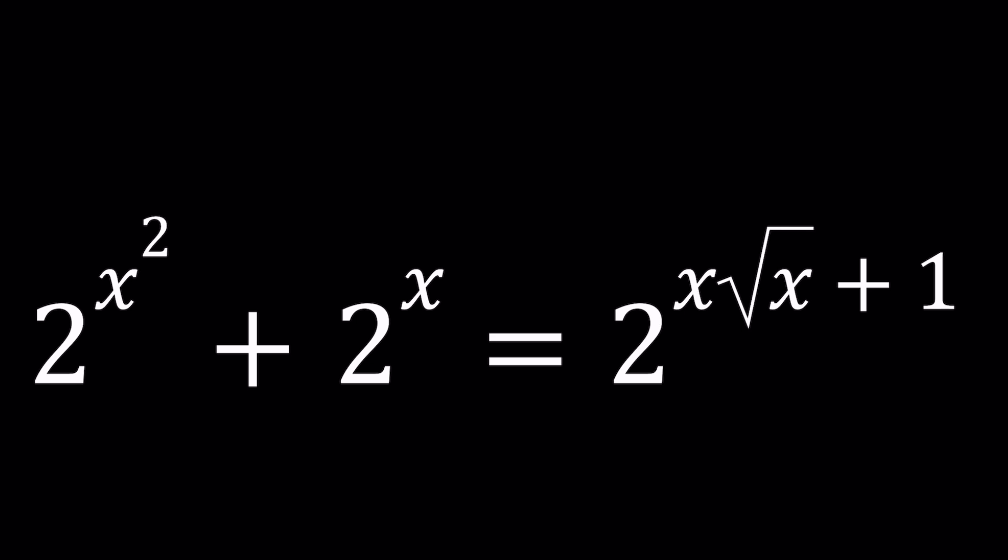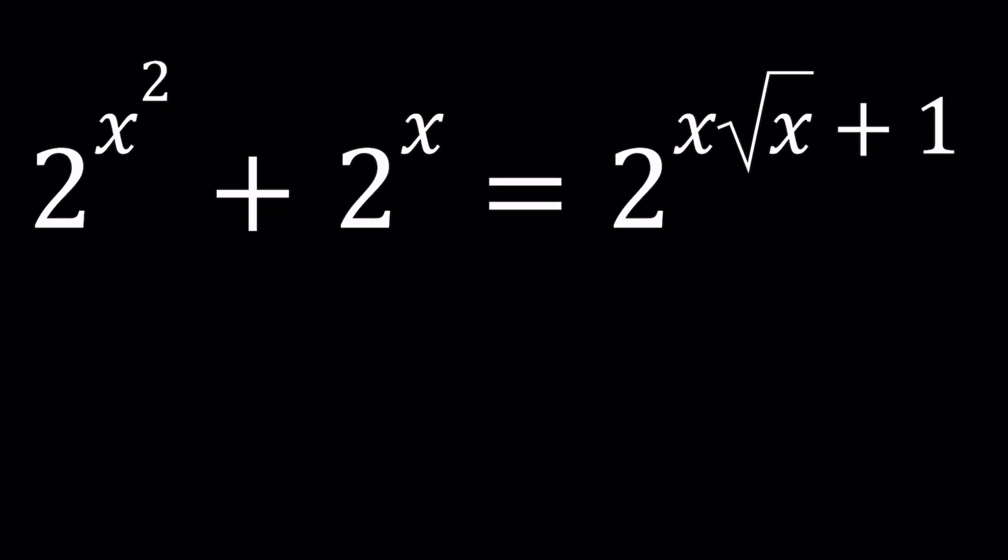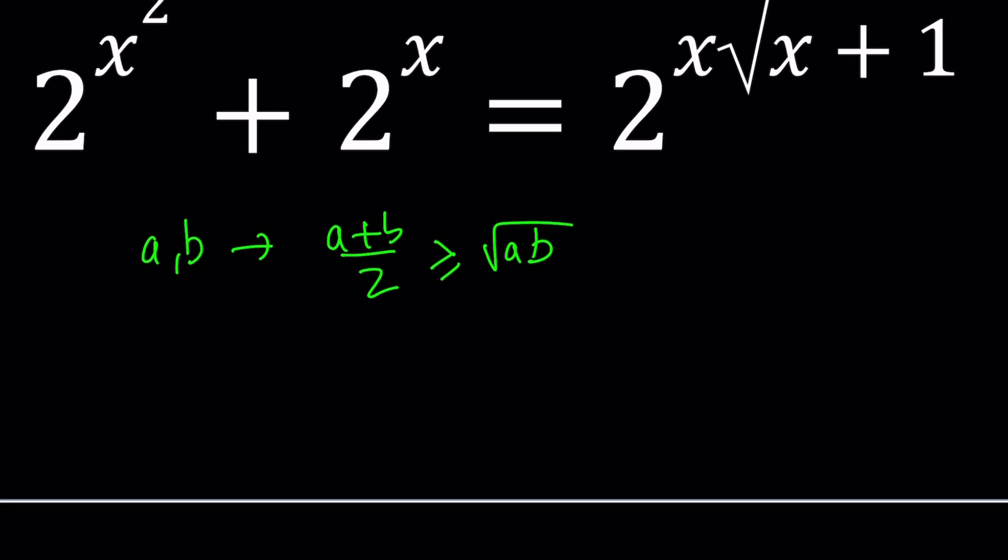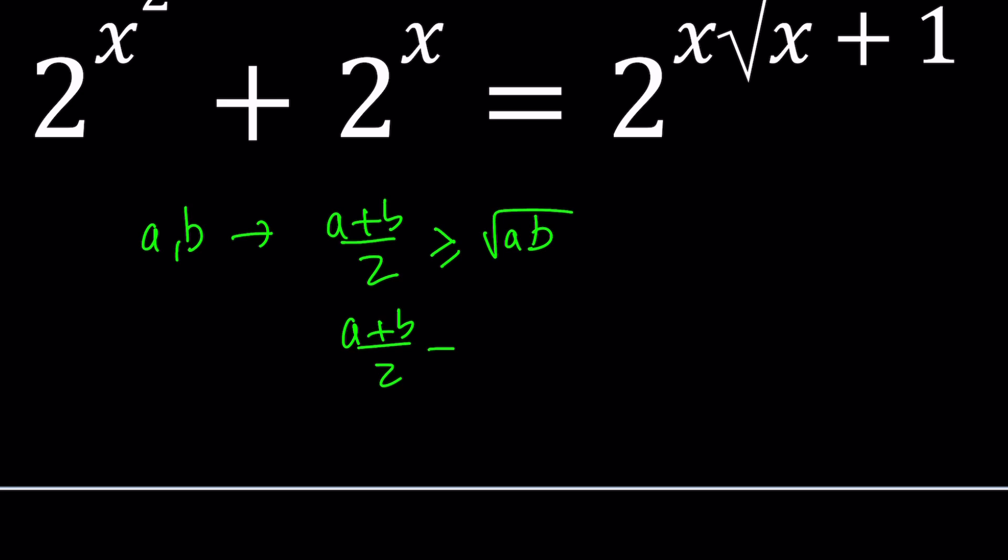Maybe some of you already know the AM-GM inequality. What does that mean? If A and B are non-negative numbers, then their arithmetic mean, which is their average, is greater than or equal to their geometric mean. This is not just true for two numbers that are non-negative, but also for any number of numbers. In the case of two numbers, it's fairly easy to prove, because this will give you A plus B over 2 minus root AB, if you put everything on the left-hand side, and this will just become root A minus root B squared, divided by 2, which is obviously never negative.